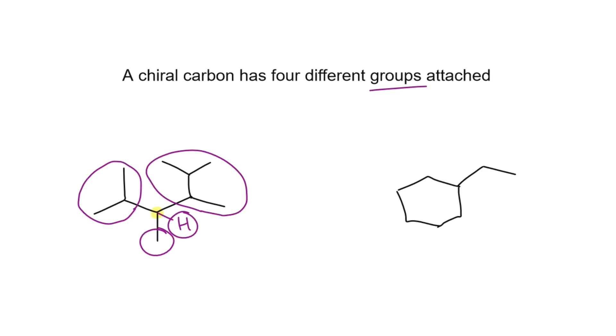The four groups are an isopropyl, a methyl, an H, and a different carbon chain. So they are four different groups, which means that this carbon is indeed chiral and we can mark it with an asterisk.